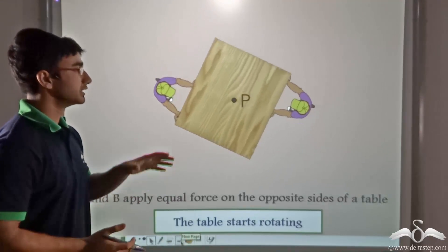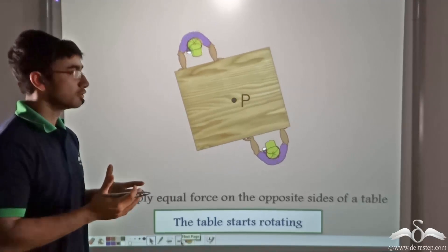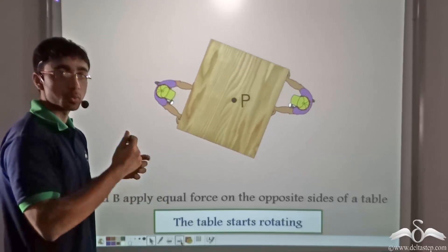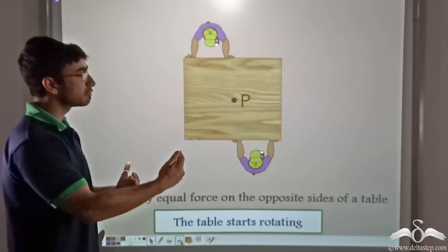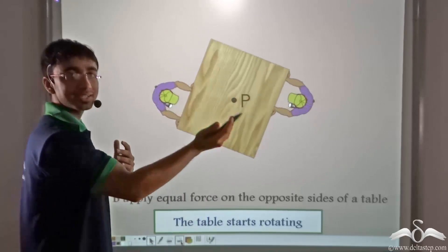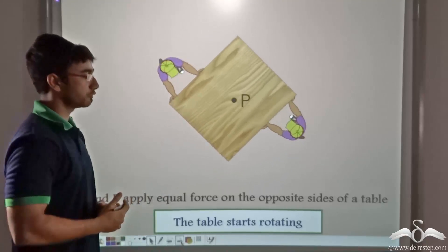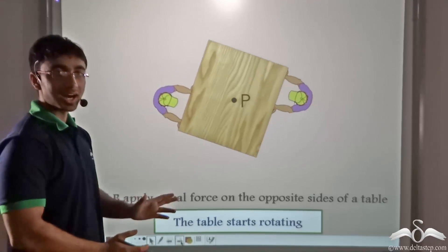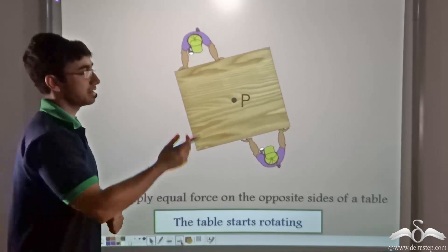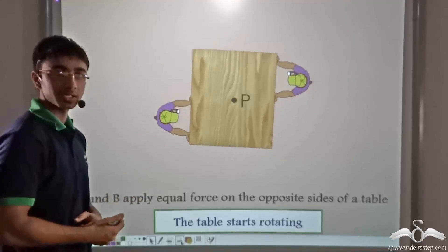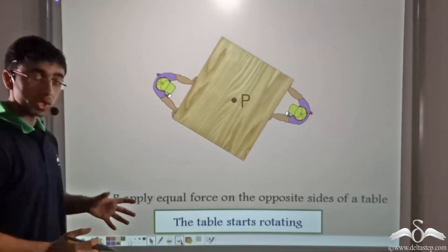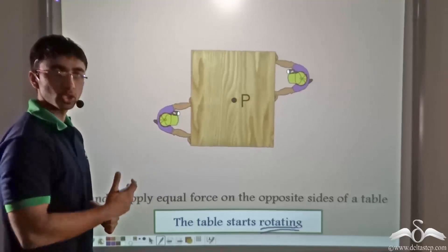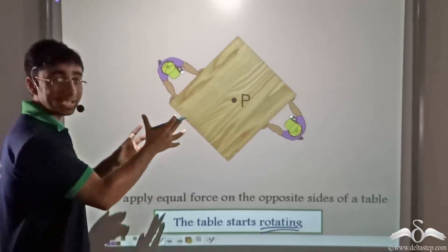Now let us perform the same thing in a slightly different manner. The two boys are applying the same force again from opposite ends of the table, but they are not directly opposite to one another anymore — they have moved to either end of the table on their respective sides. In this case you find that the table starts rotating. So even though both forces are equal in magnitude and opposite in direction, the table has a movement — it starts to rotate. What exactly is happening here?